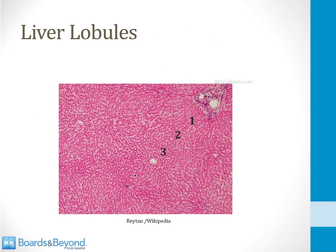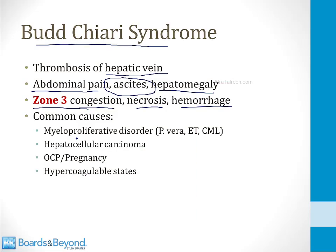Going back to the anatomy of a liver lobule — blood drains through the central vein to the hepatic vein. If there's a blood clot in the hepatic vein, blood cannot drain, and zone 3 will become congested and the hepatocytes will develop necrosis. Budd-Chiari syndrome is commonly associated with myeloproliferative disorders, especially polycythemia vera, essential thrombocytosis, or chronic myelogenous leukemia.